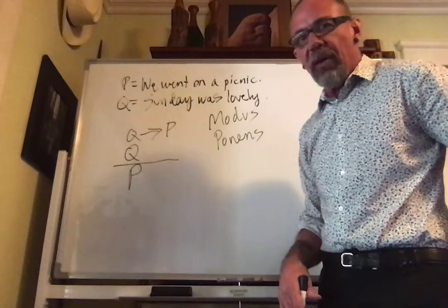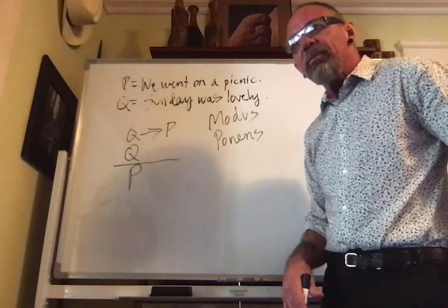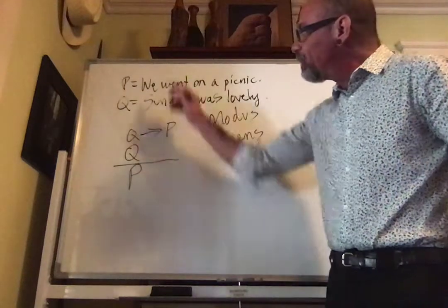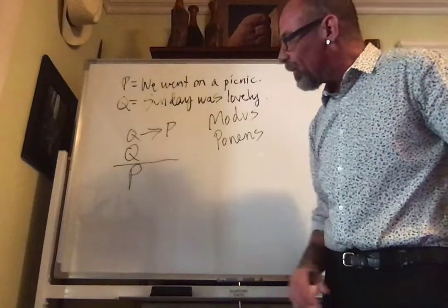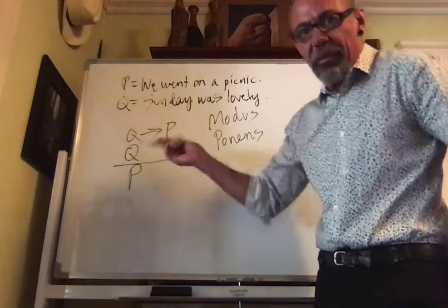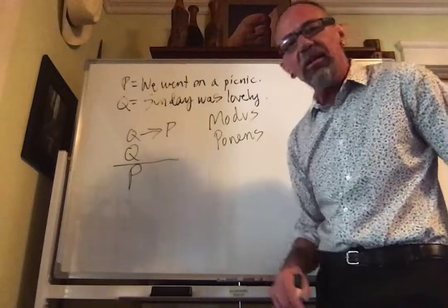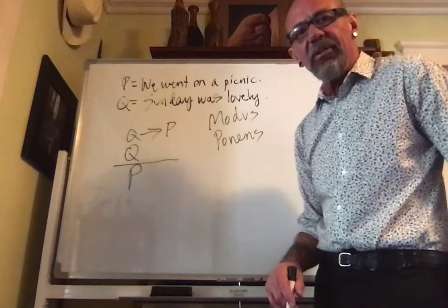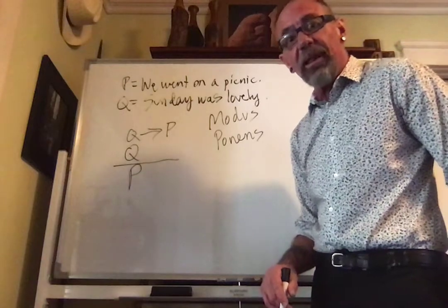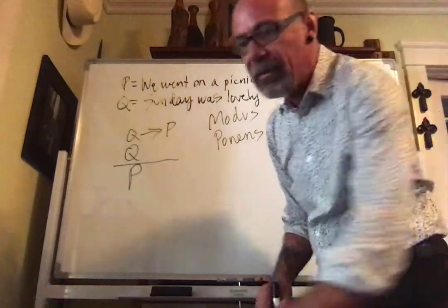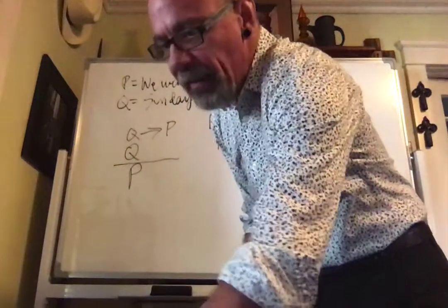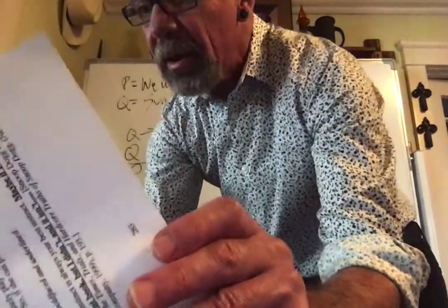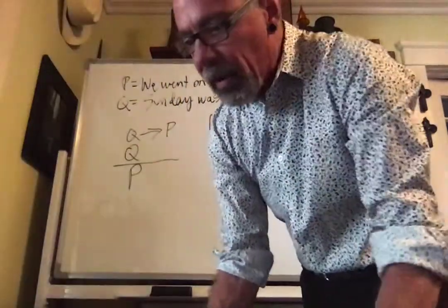Though more often than not, when we use modus ponens in ordinary, everyday reasoning, we do not spell out all the parts — that is, all the premises and the conclusion. Generally speaking, we either leave a premise unstated or we leave a conclusion unstated. All right, that was number one. I'm going to jump now to number four.